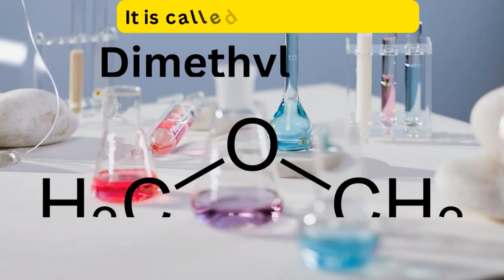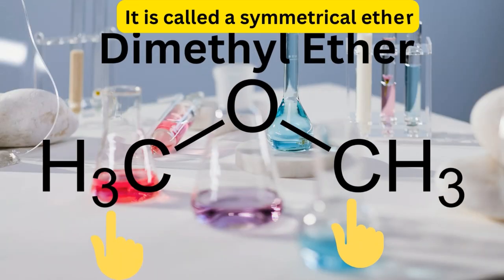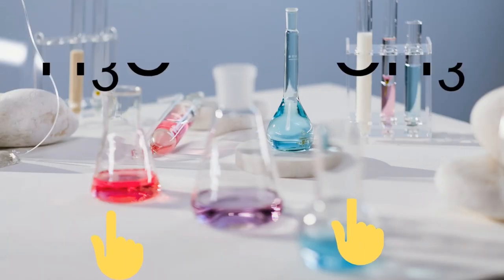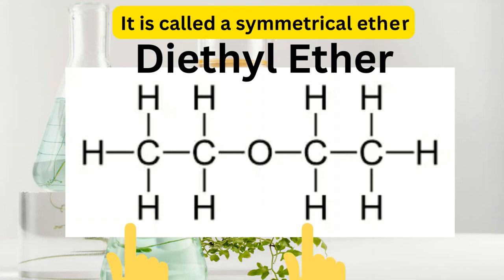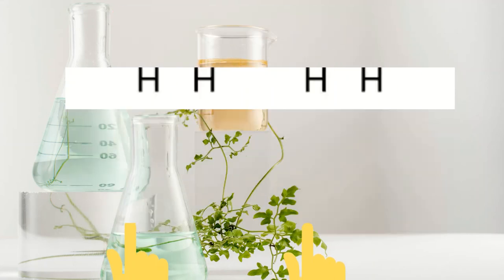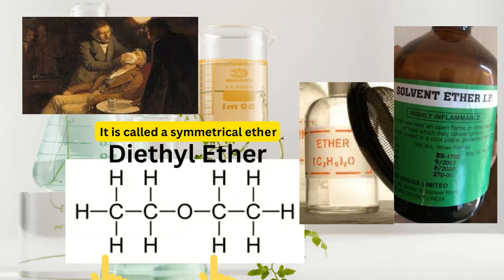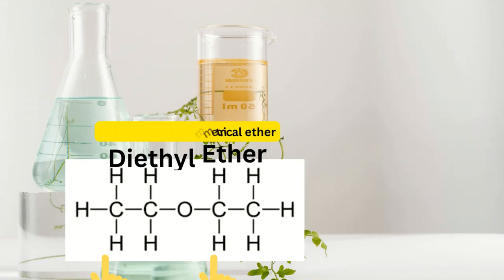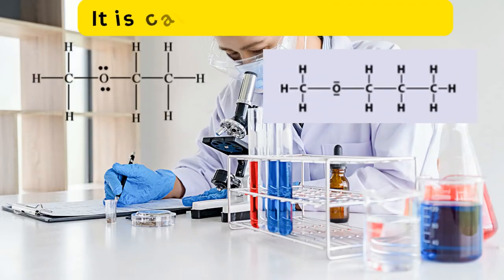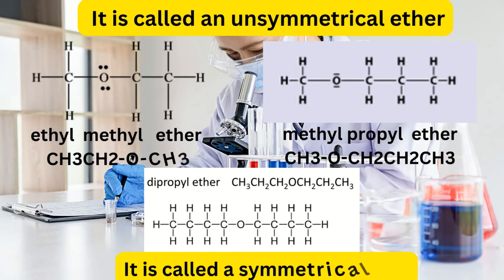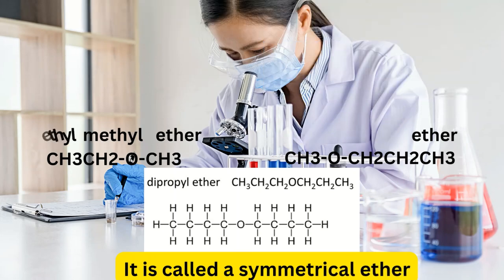Let's take a look at some examples. Dimethyl ether is an example of an ether with two methyl groups. Diethyl ether, also known as ether, is a common ether used as an anesthetic and as a solvent in the laboratory. Other examples are ethylmethyl ether, methylpropyl ether, and dipropyl ether.